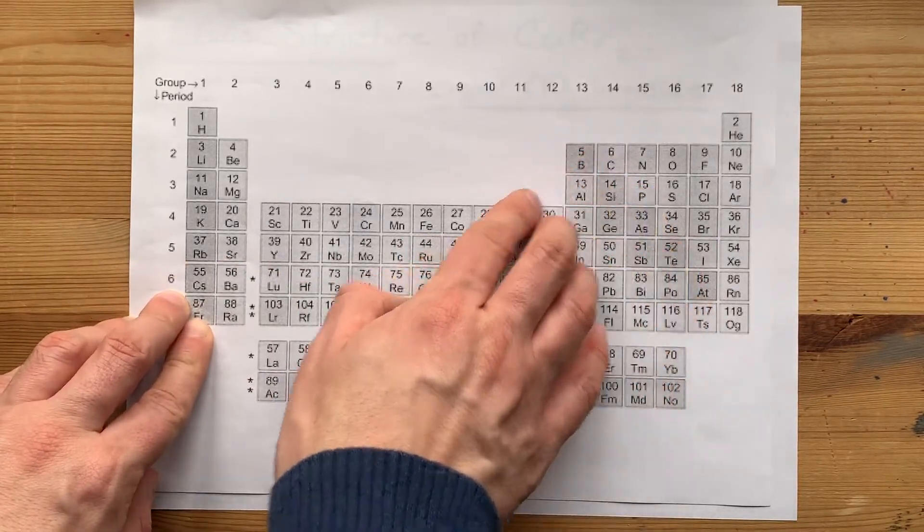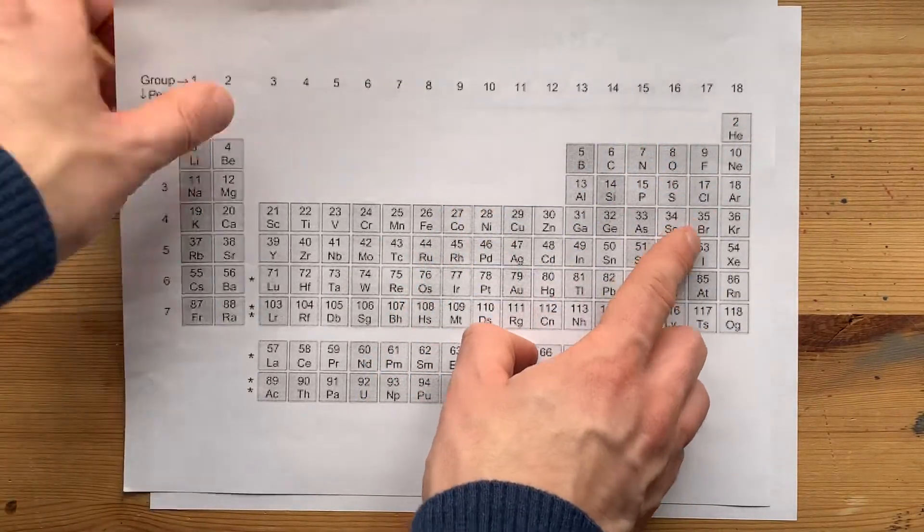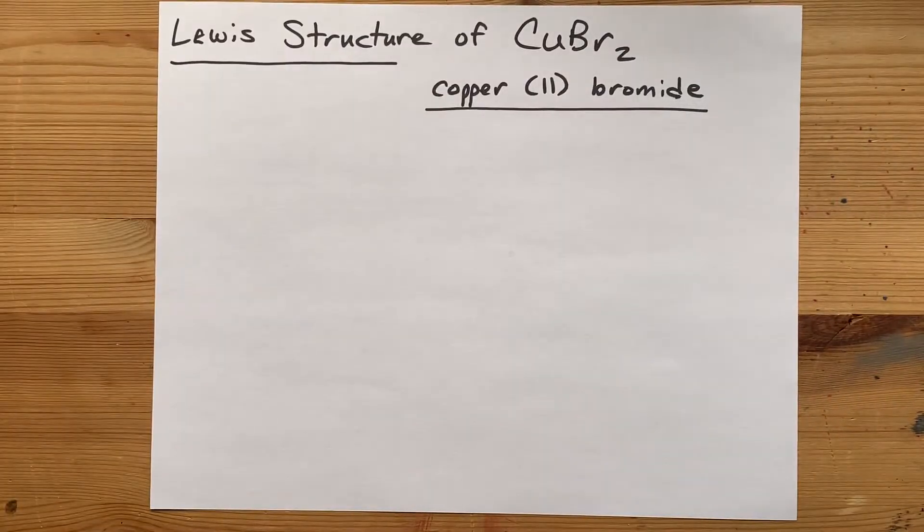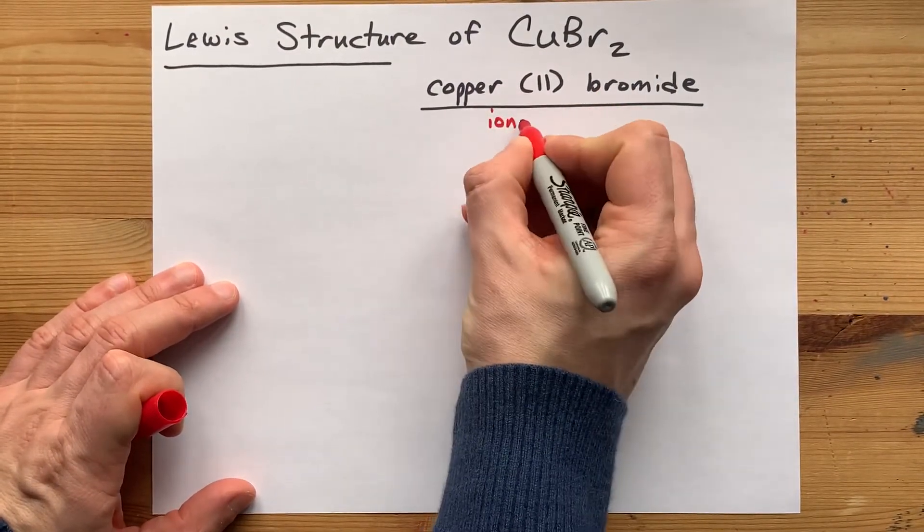To the left of the staircase are metals, that's how I know copper is a metal, and to the right of the staircase are non-metals, that's how I know bromine is a non-metal.